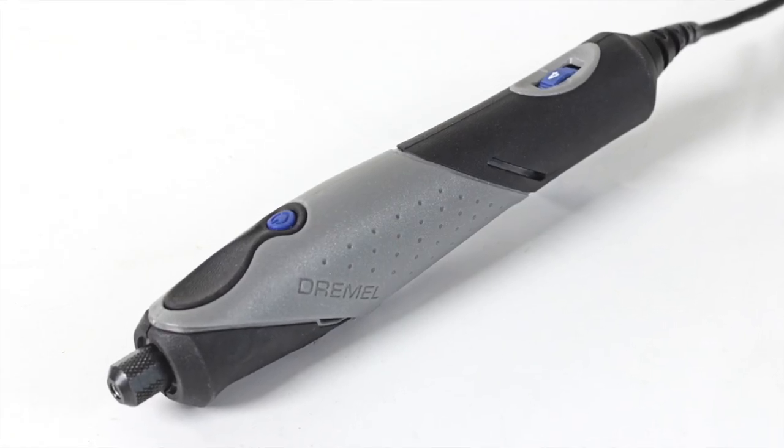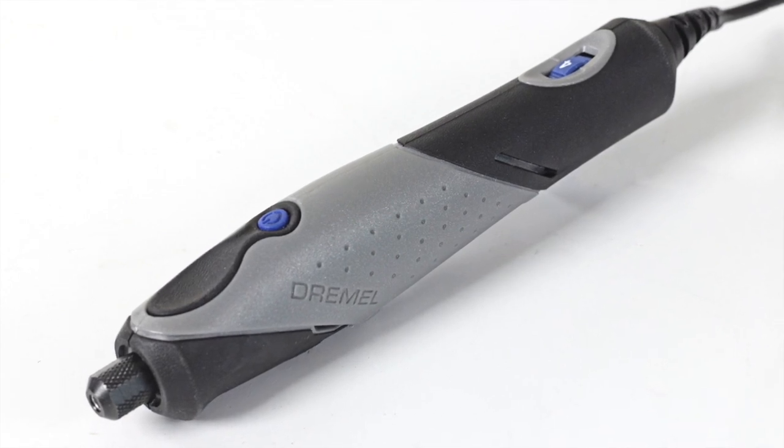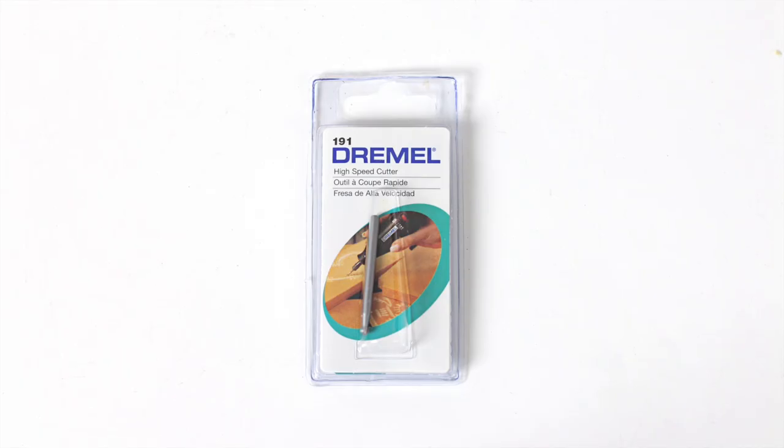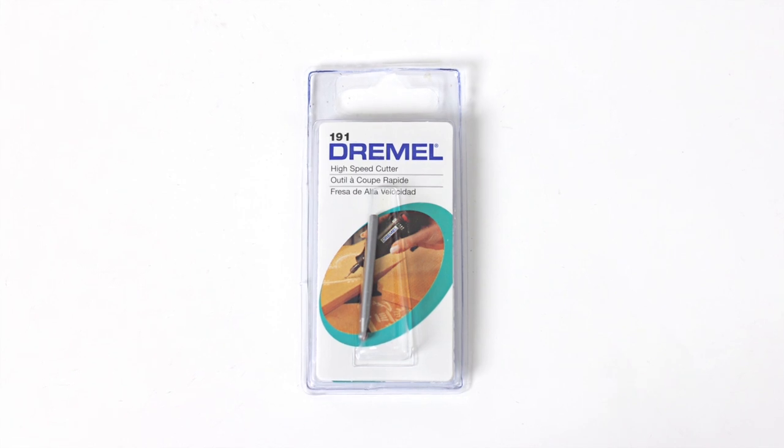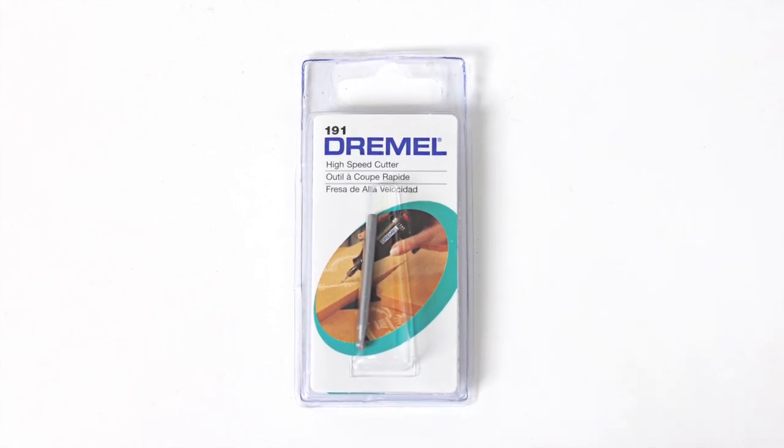It's now time to engrave the sign. For this we're using the Dremel Stylo Plus, fitted with a high-speed cutting bit 191, designed for use on wood, plastics, and soft metals.